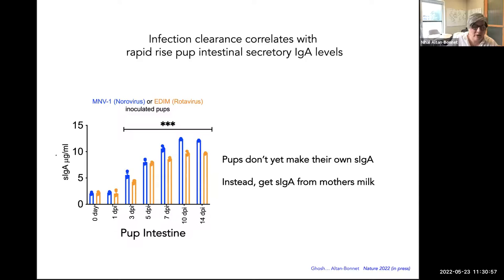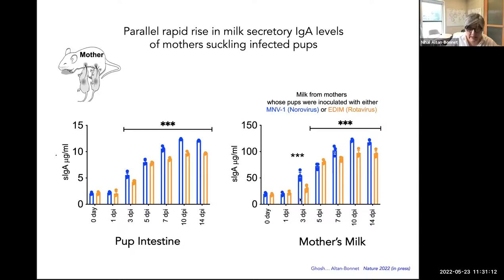Because these are pups that are still suckling — about 10-day-old pups — they don't yet make much of their own immune response, and they get their secretory IgA almost wholly from their mother's milk. When we collect the mother's milk and measure the secretory IgA there, we see a very nice symmetry: a rise in the mother's milk secretory IgA that correlates beautifully with the rise in secretory IgA in the pup's intestines.